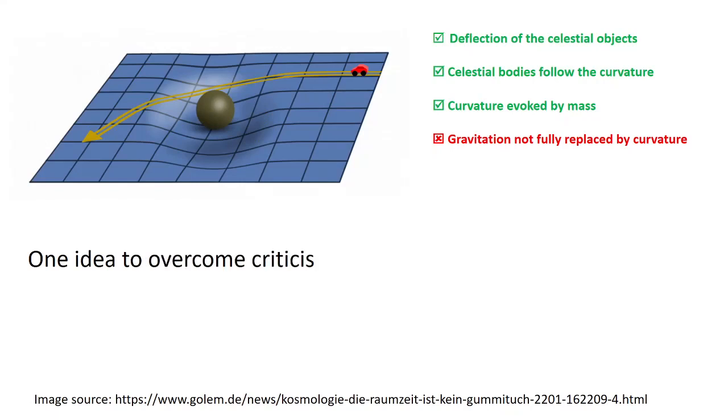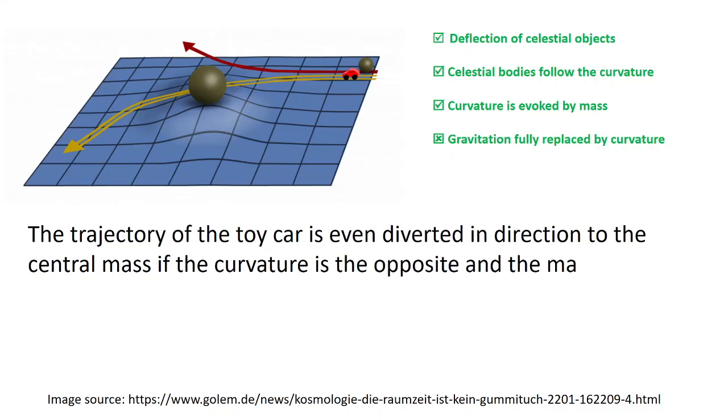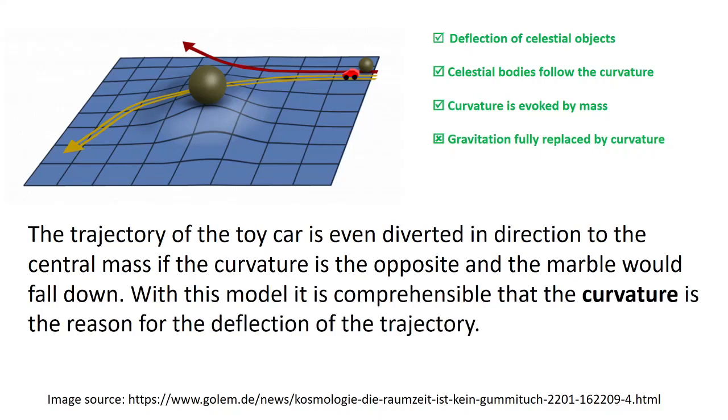One idea to overcome Criticism 1 is to use a toy car instead of a marble. The trajectory of the toy car is even diverted in direction to the central mass if the curvature is the opposite and the marble would fall down. With this model, it is comprehensible that the curvature is the reason for the deflection of the trajectory.